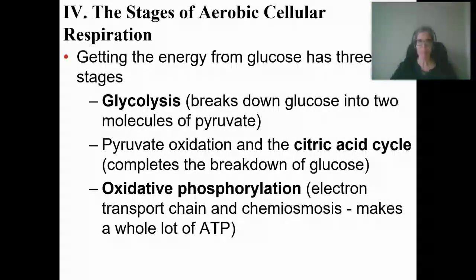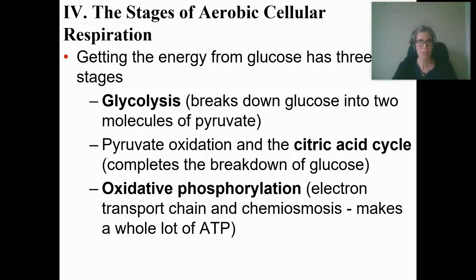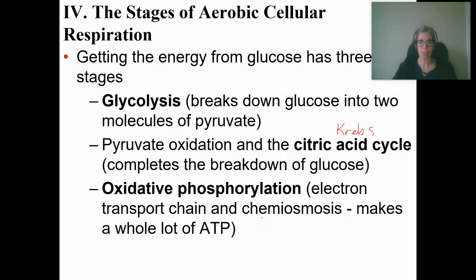Welcome to AP Biology. We are starting cellular respiration — the stages of cellular respiration. There are several stages of cellular respiration: there's glycolysis, the citric acid cycle, also called the Krebs cycle, and then oxidative phosphorylation, which includes the electron transport chain and chemiosmosis. All of this is vocab that you haven't heard yet, so this is what we're going to do for the bulk of this unit.